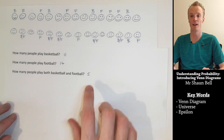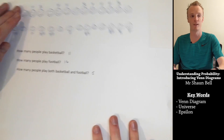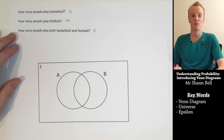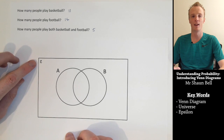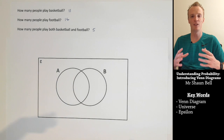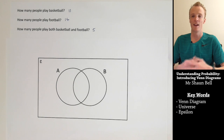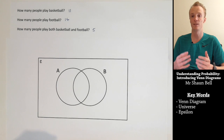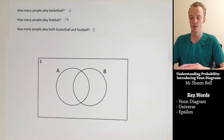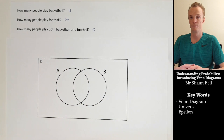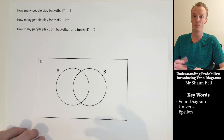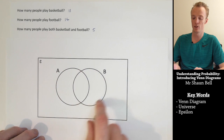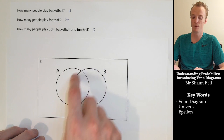The information recorded here can be very useful for when we start filling out a Venn diagram. In the Venn diagram drawn here, you'll notice the Greek letter Epsilon, which represents our universe inside this rectangle. Our universe contains all the data from the people we surveyed. Within our universe, there are two circles that overlap each other. Circle A on the left represents all the people that played basketball, and circle B on the right represents all those people that played football.